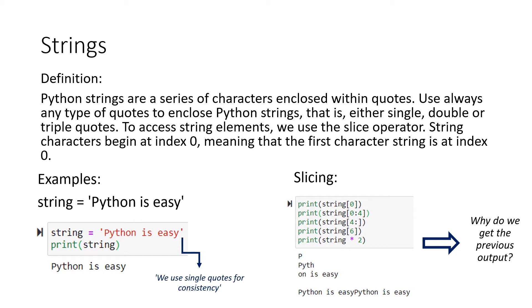If we make an example, we can have the variable string, and the content which we put into that storage unit is 'Python is easy'. Python is easy itself is a string. If you print out the result, straightforward, we get Python is easy. That is a string.